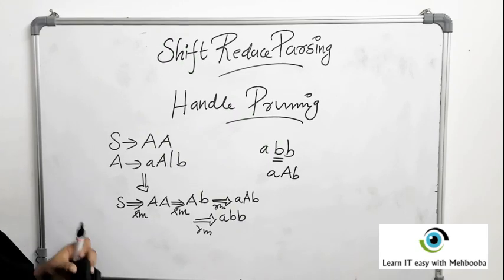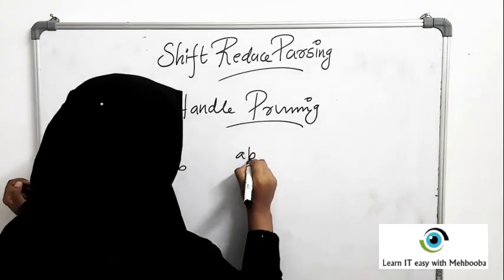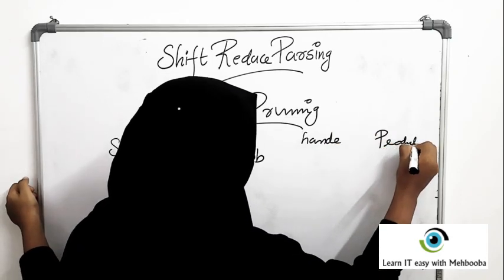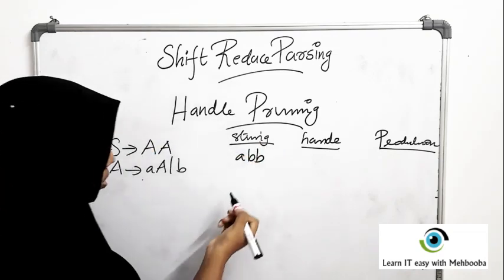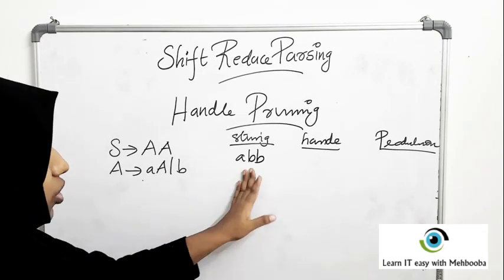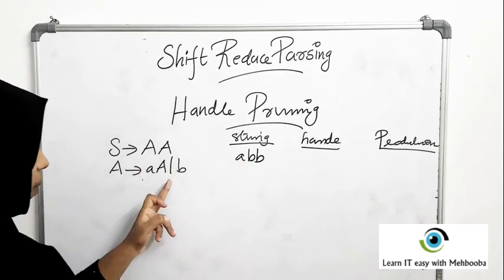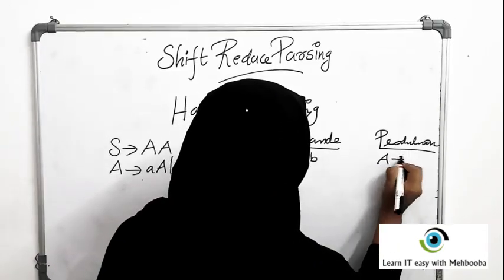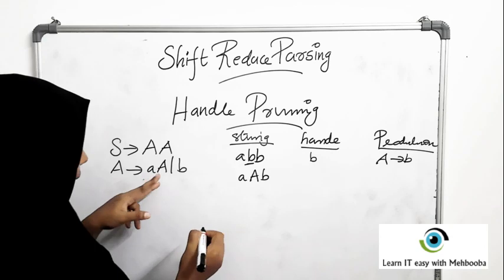Handle pruning is the process of creating a rightmost derivation in reverse. For example, we have the input a b b. We identify the handle and the production to get the rightmost derivation in reverse. Starting with the string a b b, 'a' is not the right-hand side of any production so it is not a handle. 'b a b' is not a handle either. But b is the right-hand side of the production, so b is the handle, and the production is A gives b.